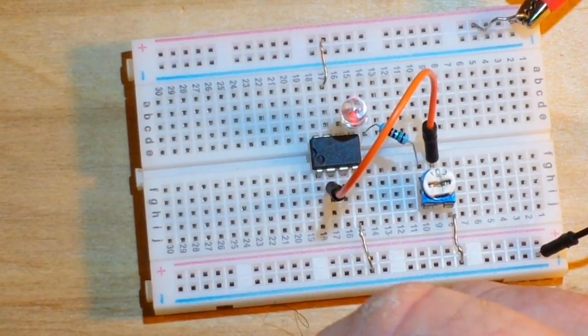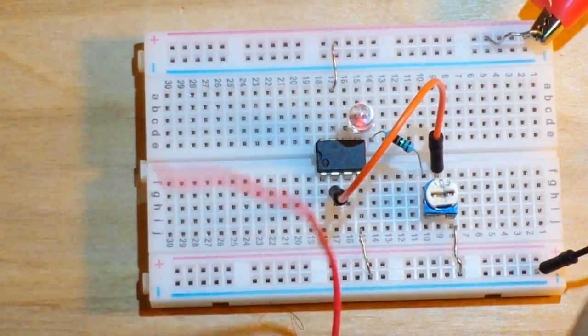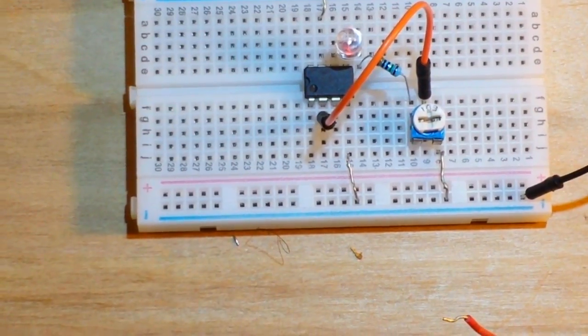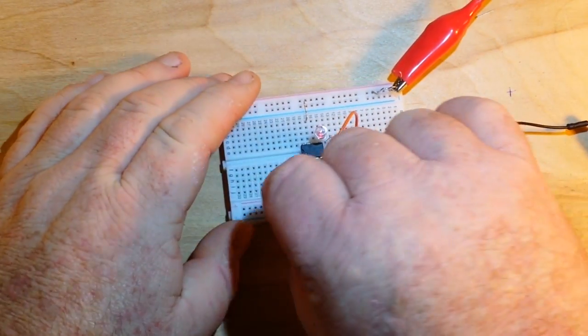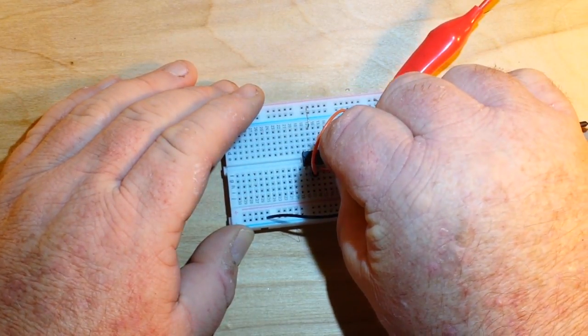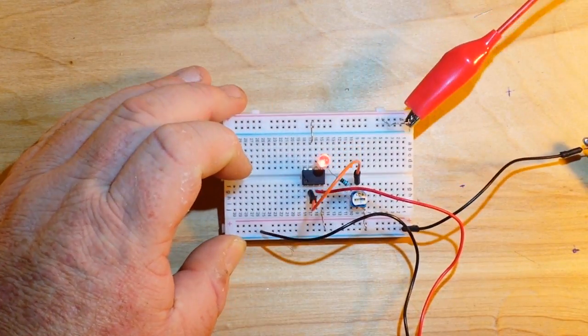And then for our VIN, I'm just going to use a 9-volt battery. Let me zoom out here so you guys get a better look. There we go. Connect all our grounds up. And there you have it.